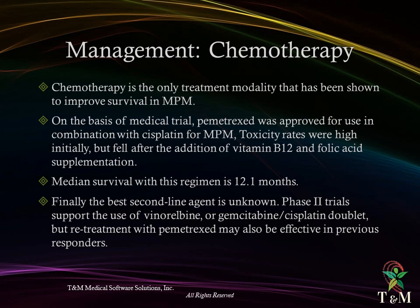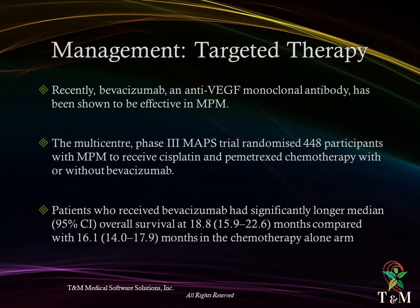Targeted therapy: bevacizumab, an anti-vascular endothelial growth factor monoclonal antibody, has been shown to be effective in mesothelioma. The multicentric phase 3 MAPS trial randomized patients to receive cisplatin and pemetrexed with or without bevacizumab. It showed significantly longer median overall survival of 18 months compared to those who did not receive bevacizumab.